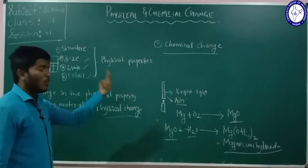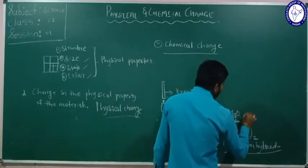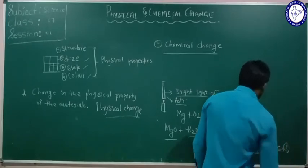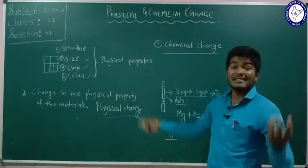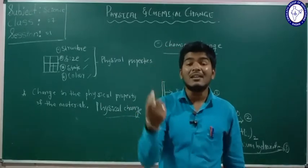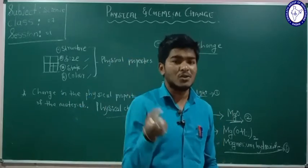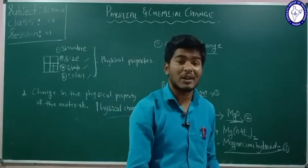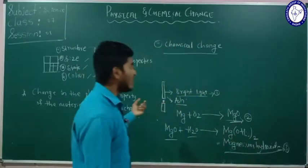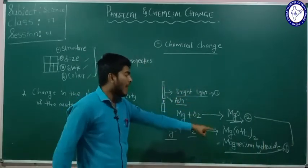When we burn the magnesium ribbon, we get two different things — first, we get bright light, and second, we get magnesium oxide, which is a new compound. Third, we get magnesium hydroxide — another new compound. But when you consider a physical change, no new substance is produced. For example, in the sugar solution, you can separate the sugar back by boiling the water. In a chemical reaction, two different new compounds are produced from the magnesium.